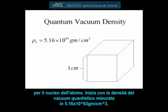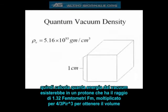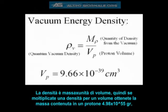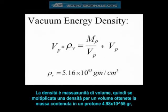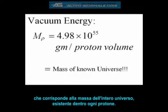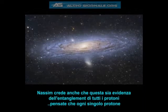It begins with the quantum vacuum density, which is a measured 5.16 times 10 to the 93rd grams per cubic centimeter. We then calculate how much vacuum energy would exist inside of a proton, which has a radius of 1.32 femtometers, multiplied by 4/3 pi r-cubed to get the volume. Since density is mass per unit volume, multiplying density by volume gives the mass contained within a proton volume: 4.98 times 10 to the 55th grams.